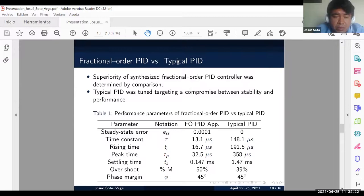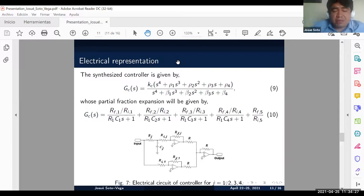After verifying the performance of the controller, we need an electrical representation of the control obtained. Equation nine shows the transfer function of the control through the biquadratic approximation. Then, if the approximation can be expanded in partial fractions, the control can be implemented by RC circuits and op-amps.